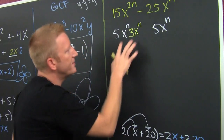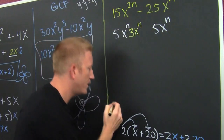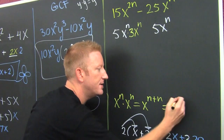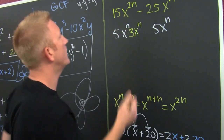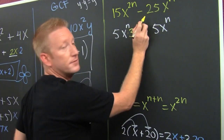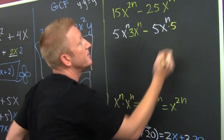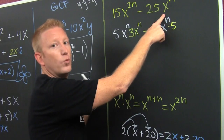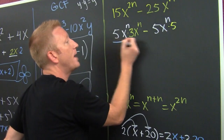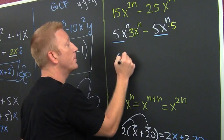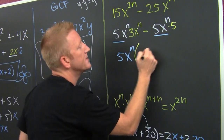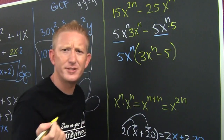Because if you have the same base and you're multiplying, you add their exponents — x to the n times x to the n is x to the n plus n, which is x to the 2n. I still have that minus in there. What do I multiply that 5 by to get 25? 5. What do I multiply that x to the n by to get x to the n? 1 — leave it alone. Now I have to point out that you do have this common factor. You have 5x to the n there and there, so I'm going to consolidate and write 5x to the n right there. Left over on the inside, I'm going to have all that yellow stuff — this is 3x to the n minus 5.